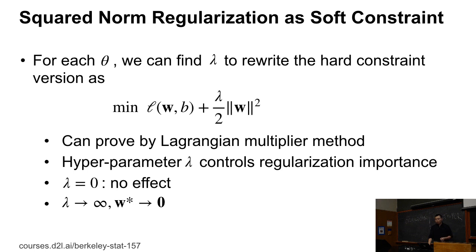So this term is called L2 regularization or squared L2 regularization. You can prove by Lagrangian multiplier that these two forms are equivalent to each other.